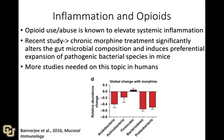When you look at the opioid literature, you'll see that inflammation is critical. Opioid use and abuse is known to elevate systemic inflammation, and recent studies suggest there are also alterations in gut microbial composition, inducing preferential expansion of pathogenic bacterial species in mice. These studies suggest chronic opioid use can change the balance of bacteria in the gut in a negative way. We need more studies in humans, but these are early indications that this will be an important research area.